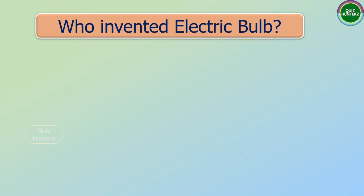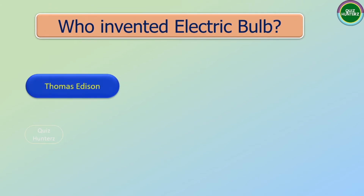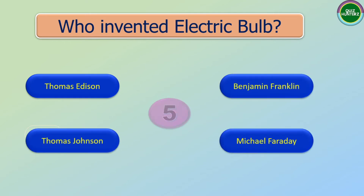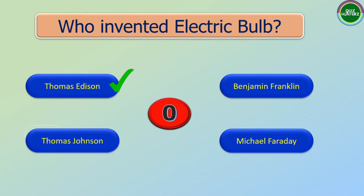Question number 1: Who invented the electric bulb? Options are: Thomas Edison, Benjamin Franklin, Thomas Johansson, Michael Faraday. And the correct answer is Thomas Edison.